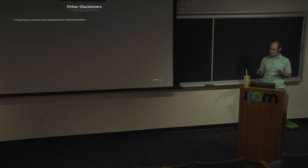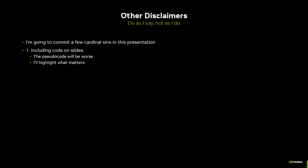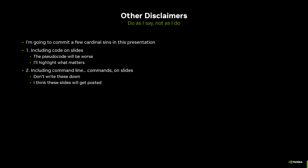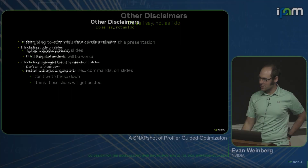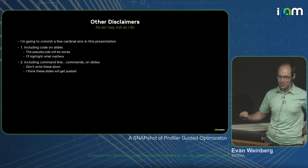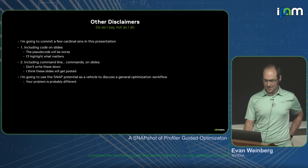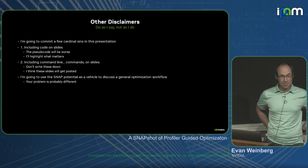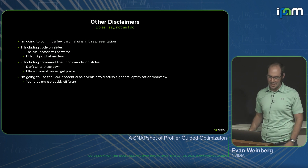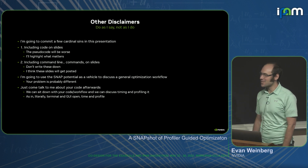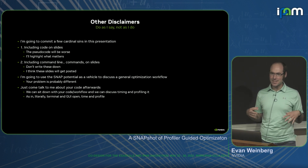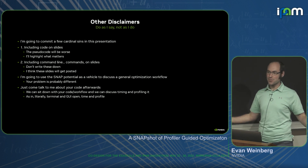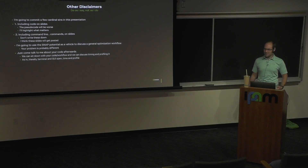Some disclaimers: I'm going to commit some cardinal sins in this presentation. There's going to be code on slides — I'll try to keep it focused and highlight what matters. I'll also add some command line commands. Don't write these down; the slides will be posted. I'm going to use the SNAP potential as a vehicle to discuss an optimization workflow. You're probably doing something different, so come talk to me afterwards.